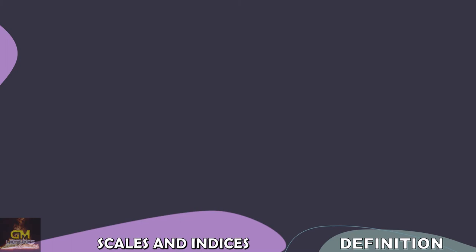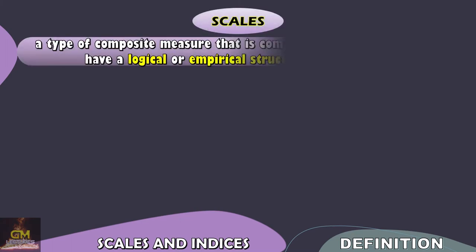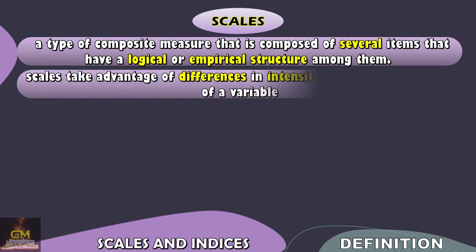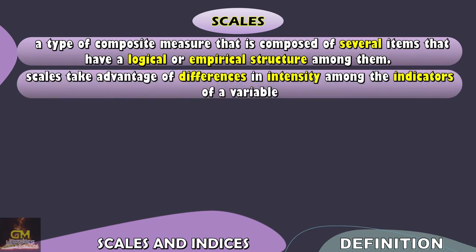Before anything else, let's define scales and indices. Scales are a type of composite measure that is composed of several items that have a logical or empirical structure among them. Scales take advantage of differences in intensity among the indicators of a variable.